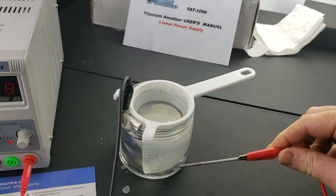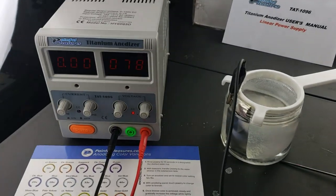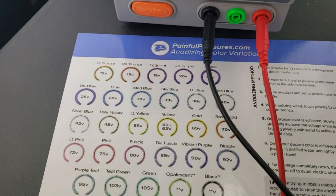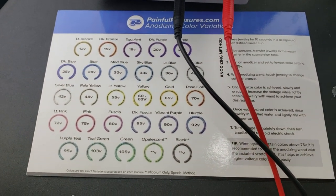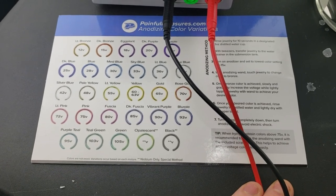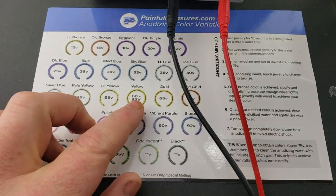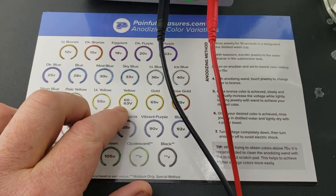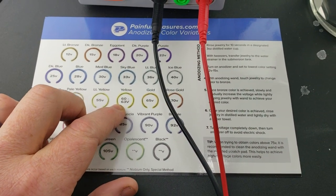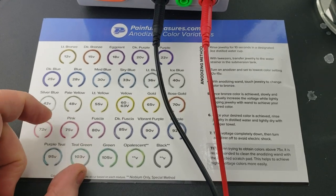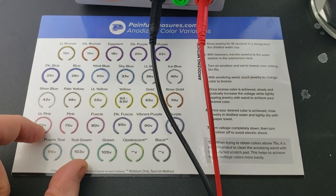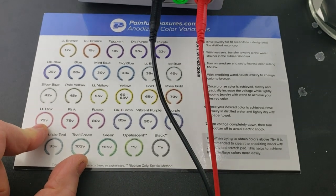You can see on here the colors of the various voltages and what they're going to yield when you put the titanium in there. I'm going for this gold color with the crown portion and this pink with the remainder.